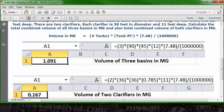So, again, open up another blank Excel spreadsheet. And in cell C1, type the description for this one, which is volume of two clarifiers in MG.